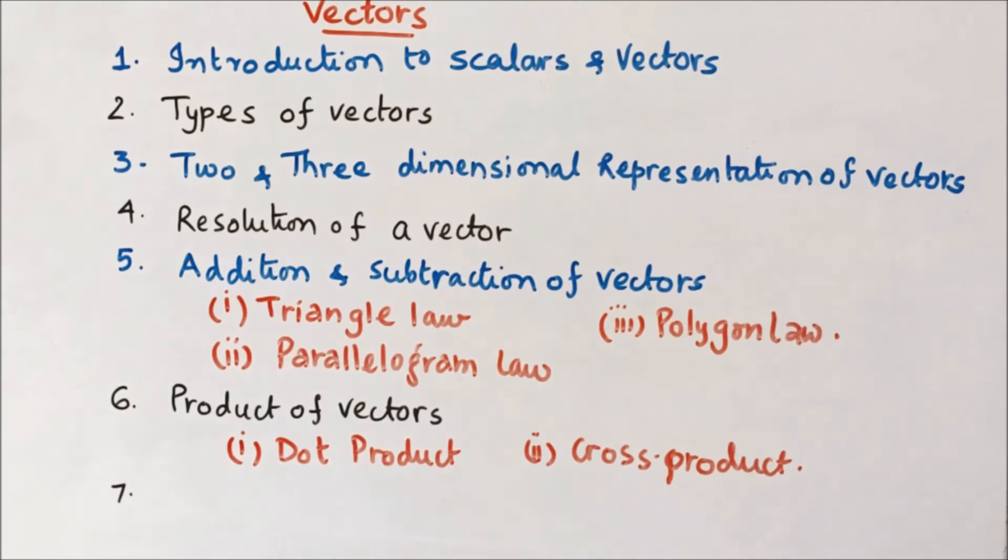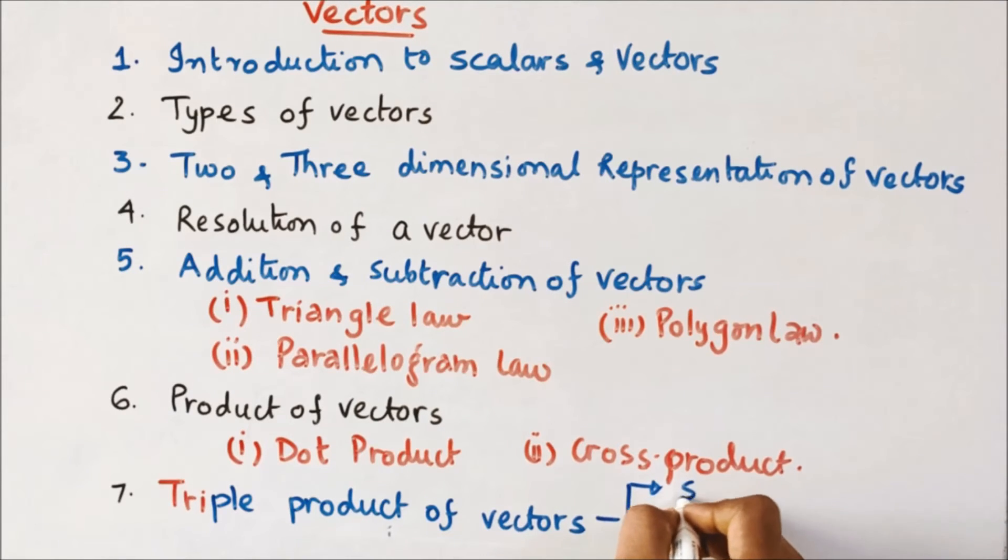Number seven: triple product of vectors, consisting of both scalar triple product and vector triple product.